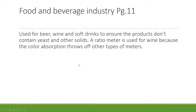The food and beverage industry uses turbidity analyzers for beer, wine, and soft drinks to ensure products don't contain yeast or other solids. Ratio meters are specifically used for wine because color absorption throws off other types of meters — a specific application for colored fluids. Water and wastewater were in fact covered as a combined application.